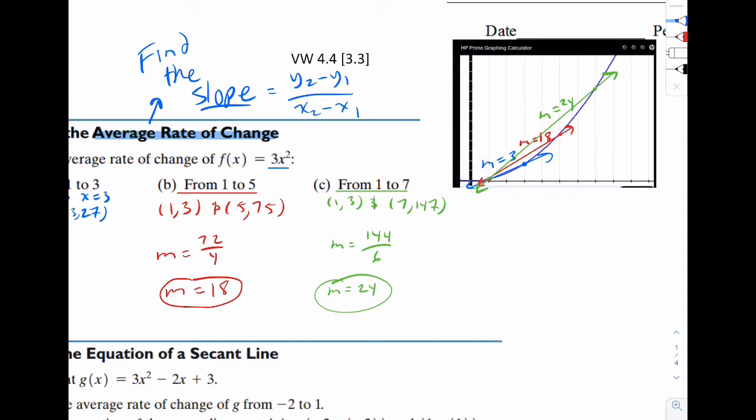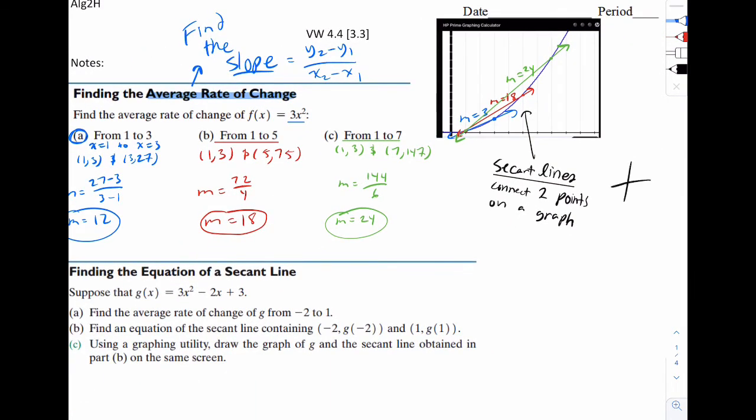What we're doing while connecting that is we're actually creating what's called a secant line. All of these are called secant lines, and what they do is they simply connect two points on a graph. This is different from tangent. Earlier we were doing tangent lines. Tangent lines connect a line to exactly one point on the graph. A secant line would just connect two points. Tangent would be something like this, where it hits exactly one time.